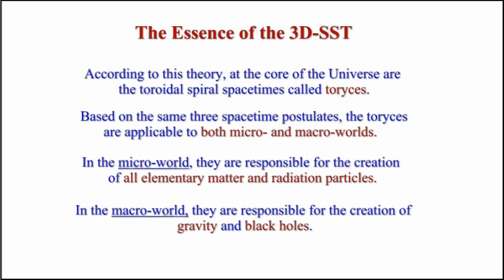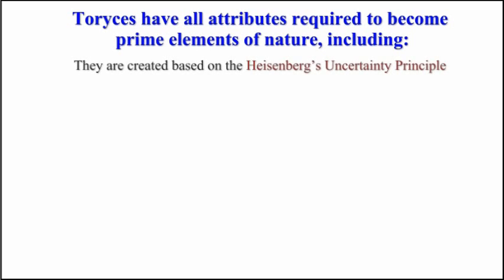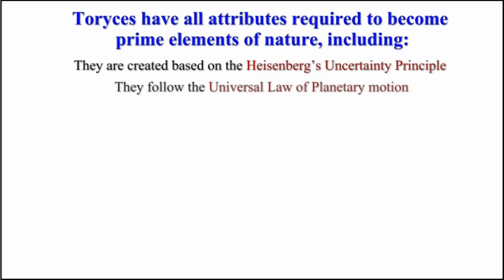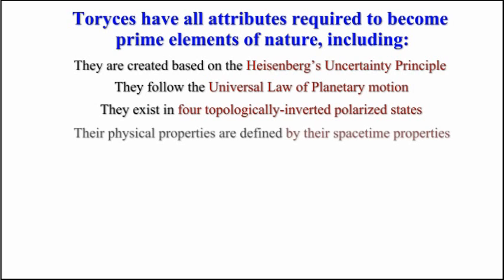In the macro world, they are responsible for the creation of gravity and black holes. The toreses have all attributes required to become prime elements of nature, including: they are created based on Heisenberg's uncertainty principle; they follow the universal law of planetary motion; they exist in four topologically inverted polarized states; and their physical properties are defined by their spacetime properties.